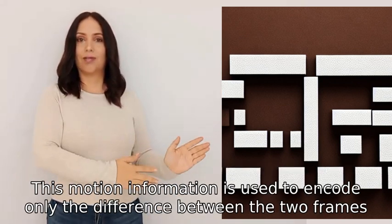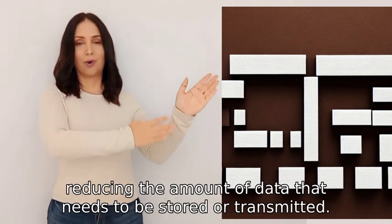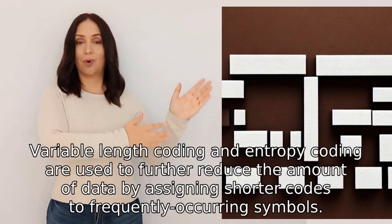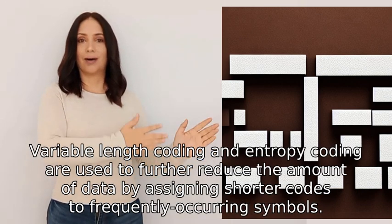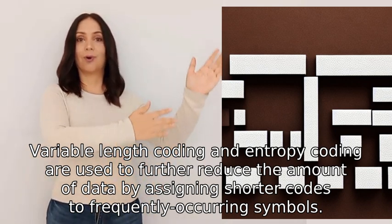This motion information is used to encode only the differences between the two frames, reducing the amount of data that needs to be stored or transmitted. Variable length coding and entropy coding are used to further reduce data by assigning shorter codes to frequently occurring symbols.